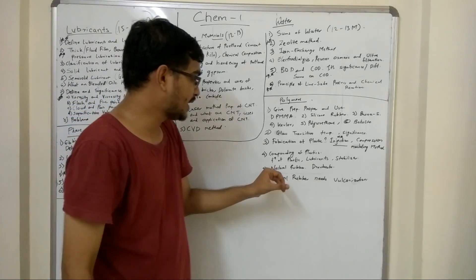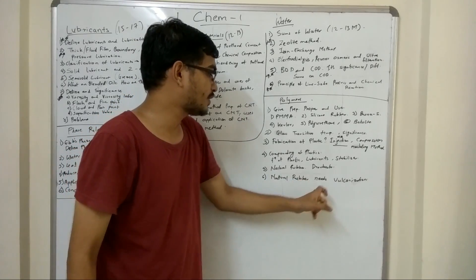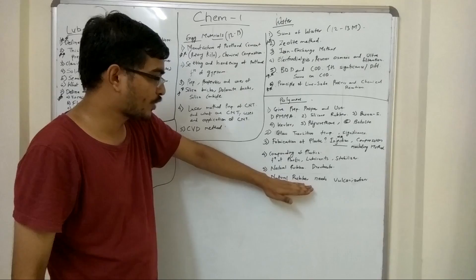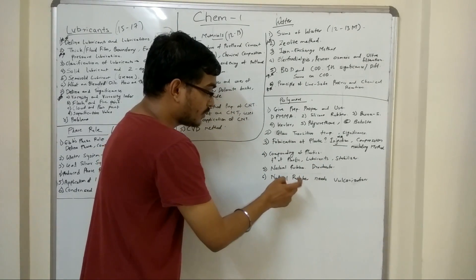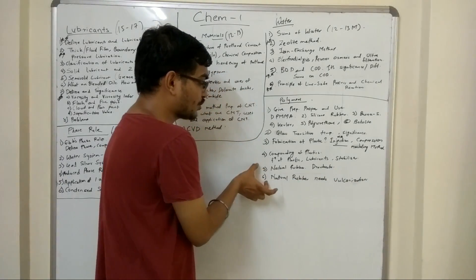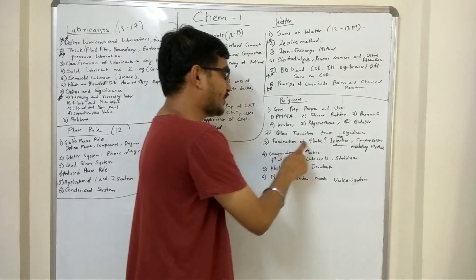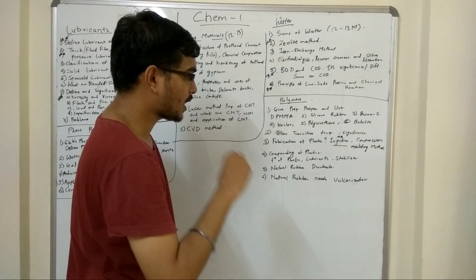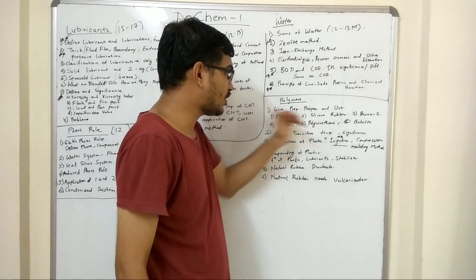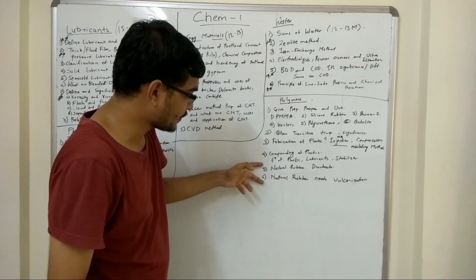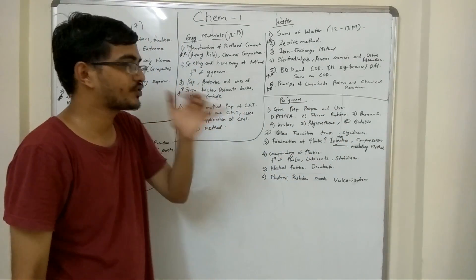Compounding of plastics is another very important question - they can ask function of plasticizers, lubricants, and stabilizers in compounding of plastics. Another important question is natural rubber and its drawbacks, seen in almost every paper. If this question doesn't come, then natural rubber needs vulcanization - give reason - is asked. One fixed question will be asked from here. Glass transition temperature is again a fixed question. Fabrication of plastic - injection or compression - any one method can be asked as a fixed question.